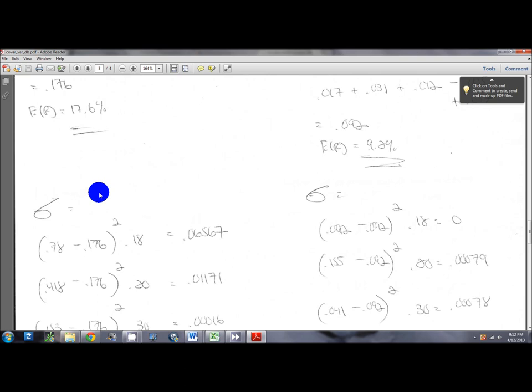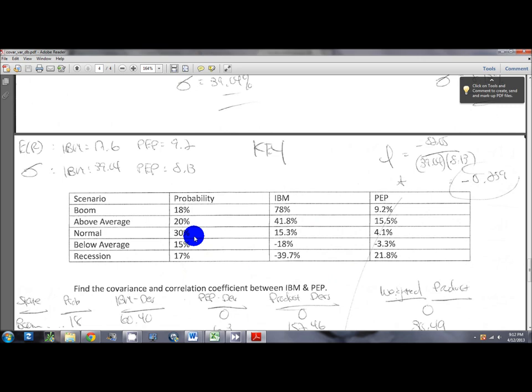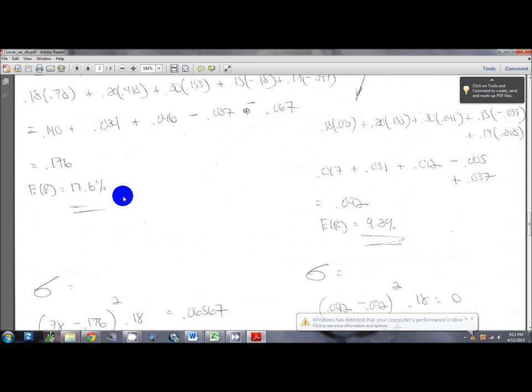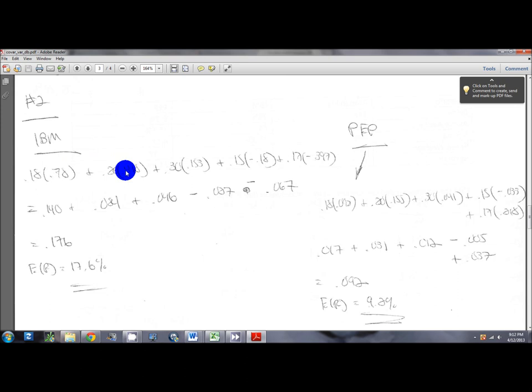This top calculation is how I found the expected return of 17.6%. It's basically just a weighted average across the various states weighted by the probability of that state according to the scenario analysis or the probability distribution table that you have. I'm referring to this table right here. Here are the probabilities of each state. Here is the return for IBM in each state. I'm taking the probability of the state times the return from that state plus probability of the next state times return of that state and so on.